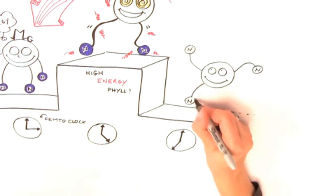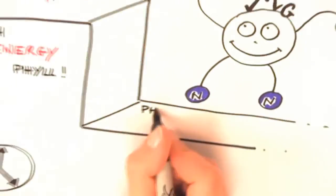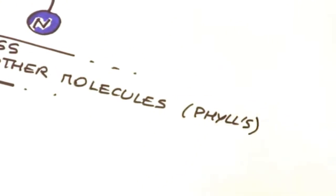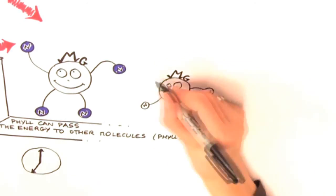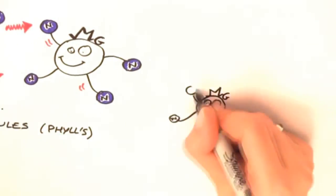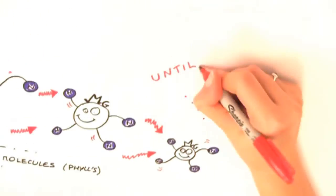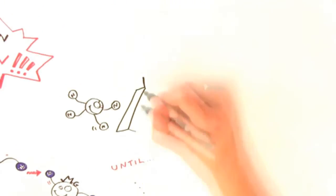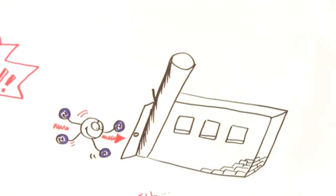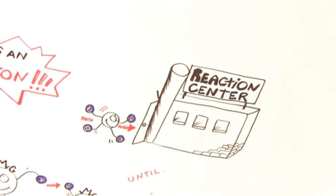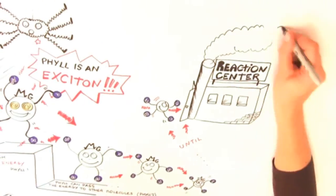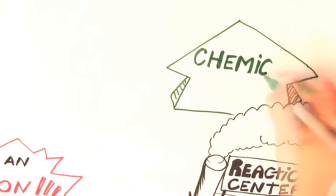Phil can then pass the excitation to the neighboring molecules. And in this way, the exciton moves through the cell. Eventually, it reaches the reaction center, where it is turned into chemical energy. Plants use this chemical energy to grow.